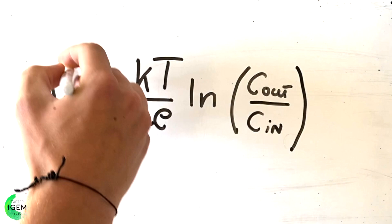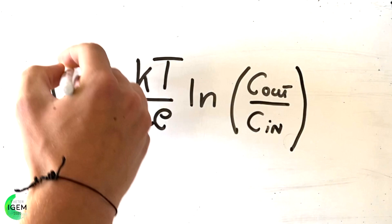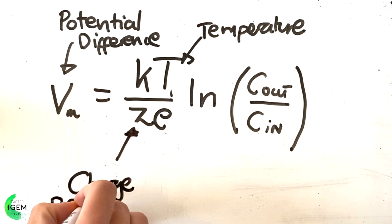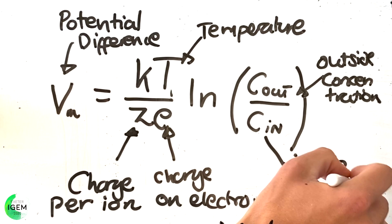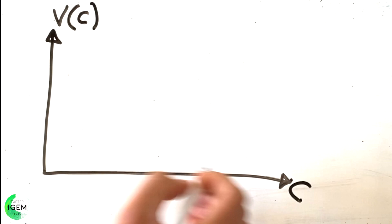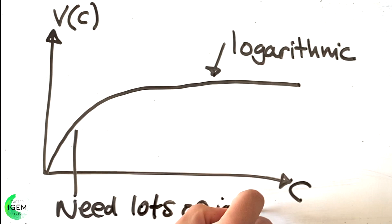The electrochemical potential across the cell membrane is given by the Nernst equation, where V is the potential difference, T is the temperature, Z is the ion charge, E is the fundamental charge of an electron, and C out and in are the concentrations in and out the membrane. The equation basically says that lots of ions need to be pumped across the membrane in order to generate a sufficiently high potential, as it's a logarithmic increase.